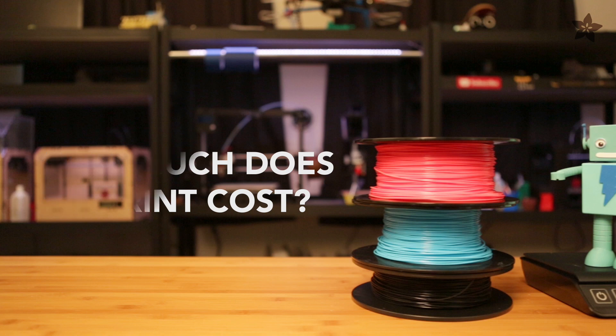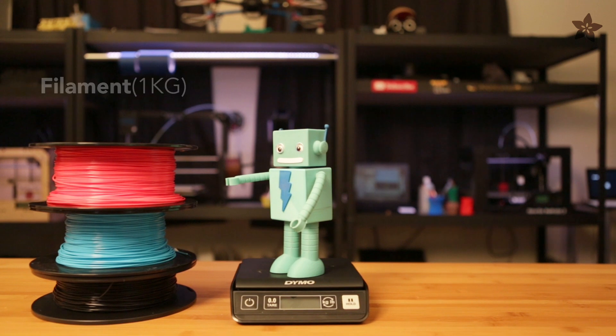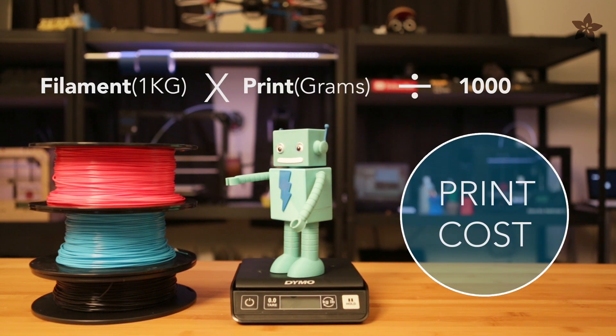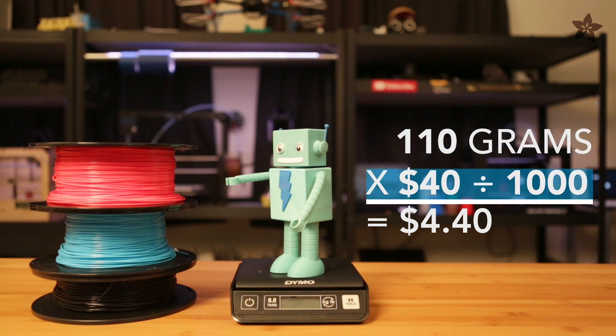So how much does my print actually cost? To find that out, we'll use a simple equation. We'll multiply the cost of the filament by the weight of the part and then divide by 1,000 to get our print cost. So if Adabot weighs 110 grams, then it only costs $4 in filament to print. And that's pretty good to know.